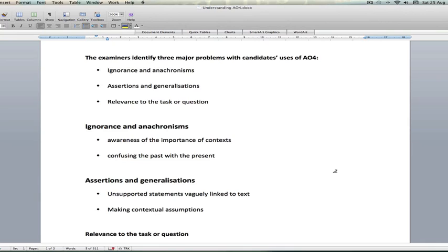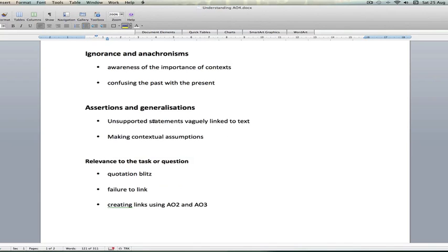The examiners focus on three major areas of concern when candidates are answering questions based on AO4. First one is ignorance and anachronism. Anachronism is when you put modern era ideas or thoughts or circumstances into the past and judge the past as if it was the present, which is often a misconception within candidates' understanding. The second part is assertions and generalizations where people just make comments and don't back them up or make general comments about a particular time. And thirdly, as with AO2 or AO3, relevance. They don't really link the context to what they're writing about or the question.